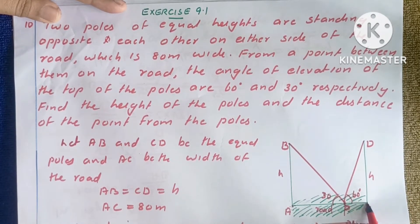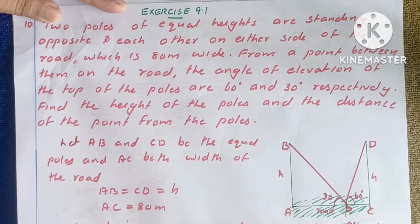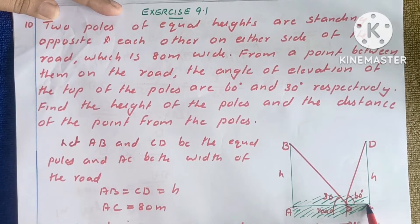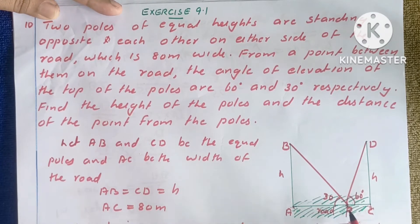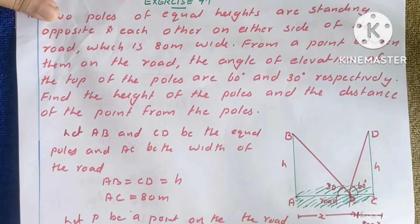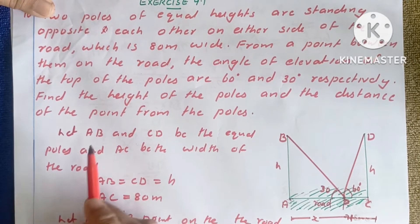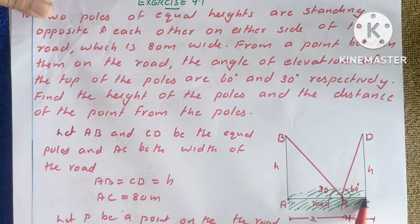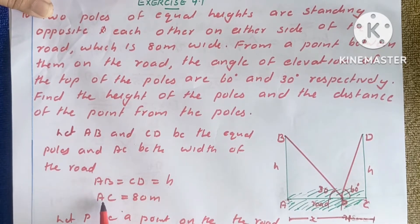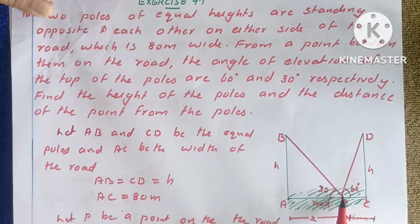AC total length is 80 meters. AP and PC are separate distances. AB and CD are equal poles. AC is the width of the road, which is 80 meters. Let P be a point on the road such that AP is equal to X and PC is equal to 80 minus X.